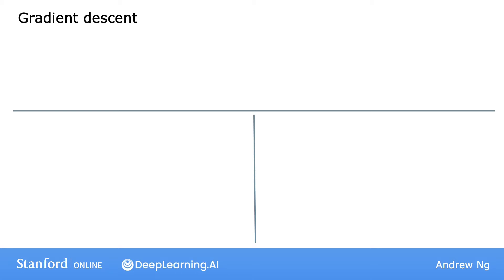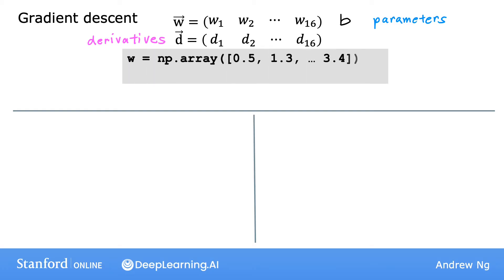Say you have a problem with 16 features and 16 parameters W1 through W16, in addition to the parameter B. You calculated 16 derivative terms for these 16 weights, and in code, maybe you stored the values of W and D in two numpy arrays, with D storing the values of the derivatives. For this example, I'm just going to ignore the parameter B.